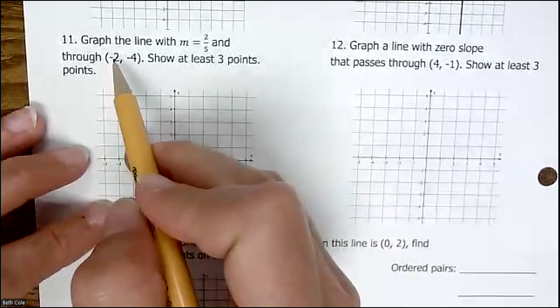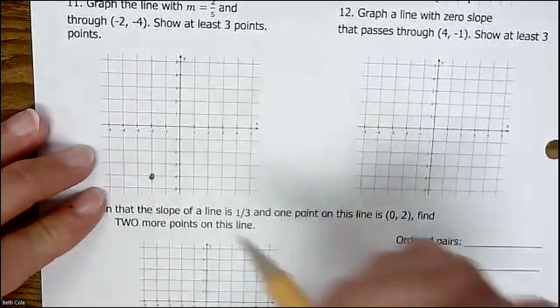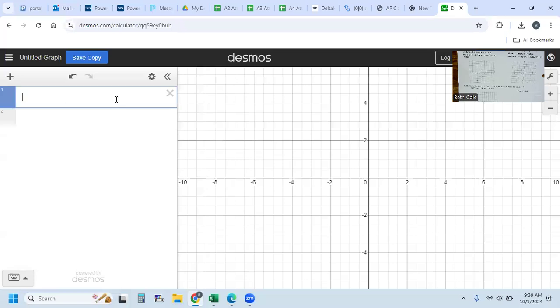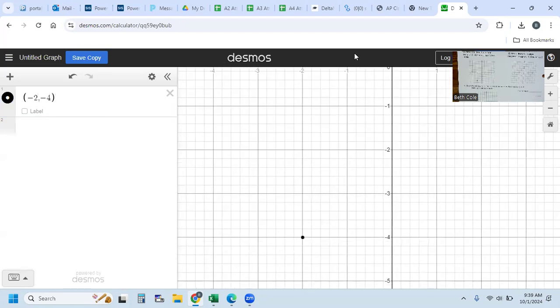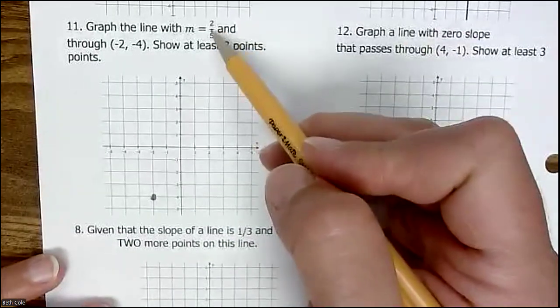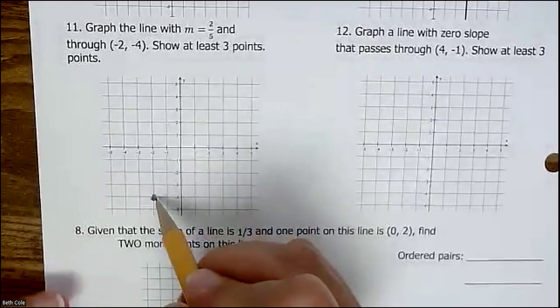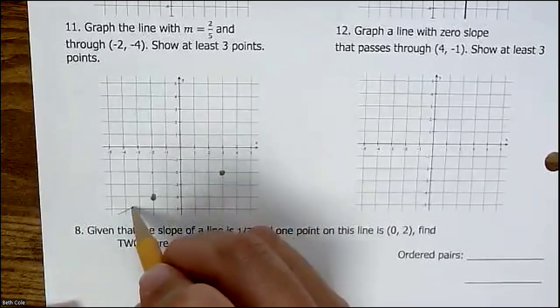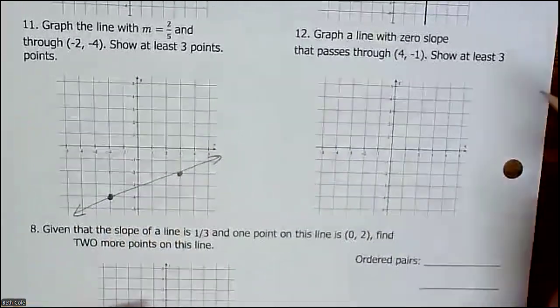Now we're going to graph the line ourselves. We want to go through the point negative 2, negative 4, which is going to be right here. If you forget how to plot a point, you can make the calculator plot it for you: negative 2 comma negative 4. Our slope is 2 fifths. M is slope, 2 fifths. That means we're going to go up 2 over 5 from this point. So up 2, over 1, 2, 3, 4, 5. You want to fit as many points as you can.